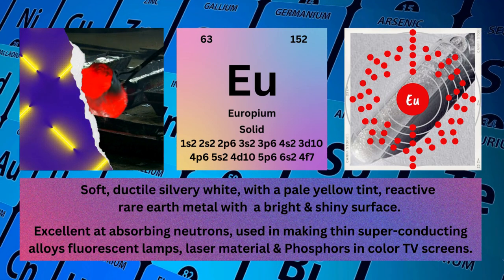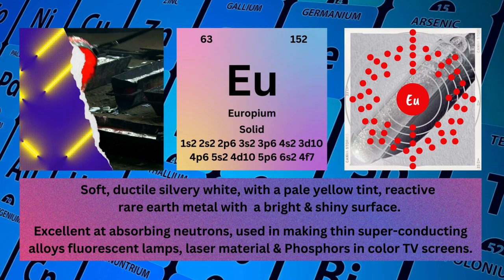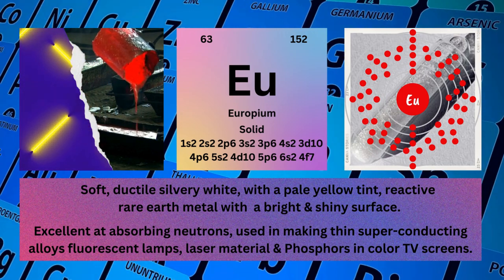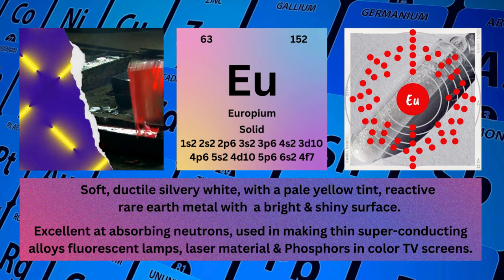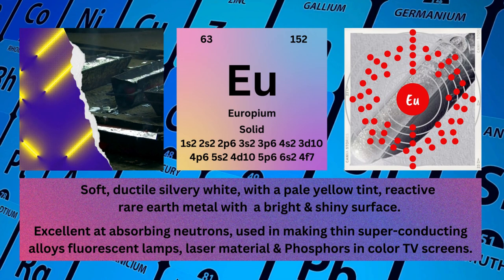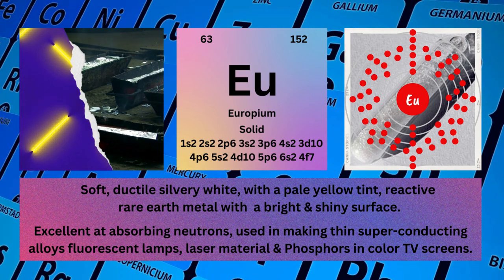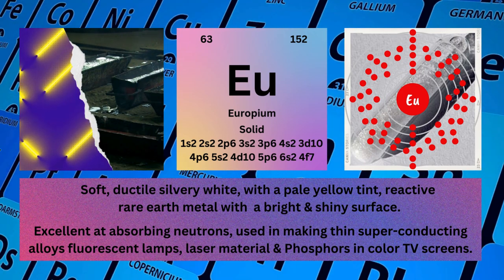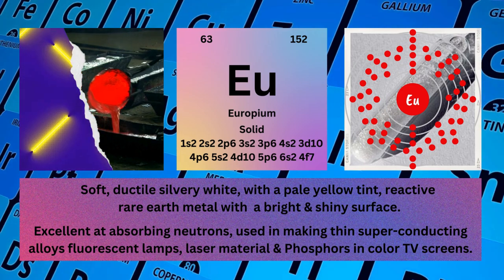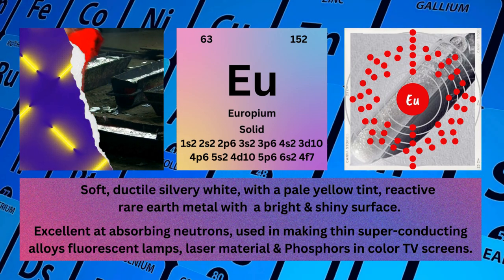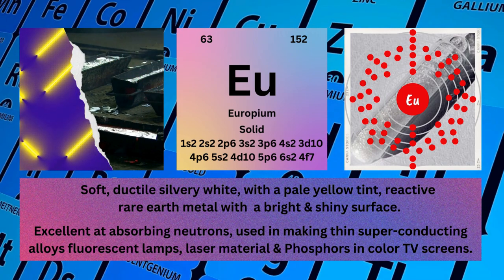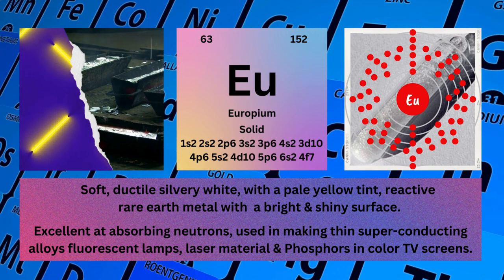Electronic configuration: 1s²2s²2p⁶3s²3p⁶4s²3d¹⁰4p⁶5s²4d¹⁰5p⁶6s²4f⁷. Physical properties: Soft, ductile, silvery-white with a pale yellow tint, reactive rare earth metal with a bright and shiny surface.